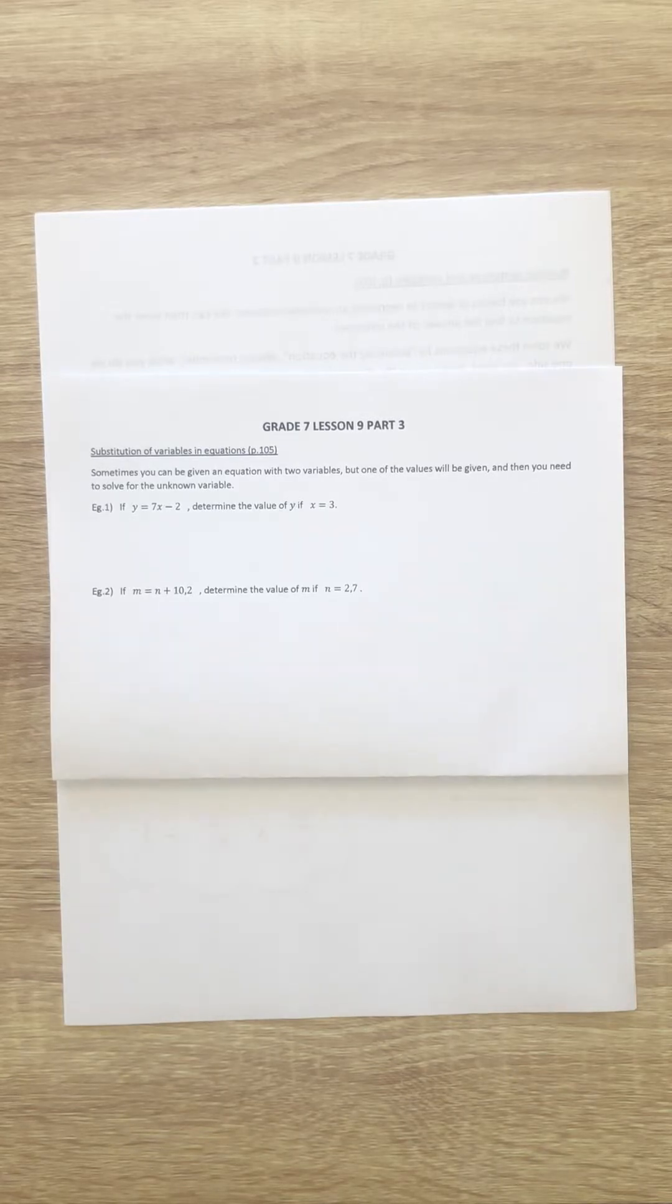So, it says sometimes you can be given an equation with two variables. So, for example, an x and a y, or an m and an n. But one of the values will be given, then you will need to solve for the unknown variable.